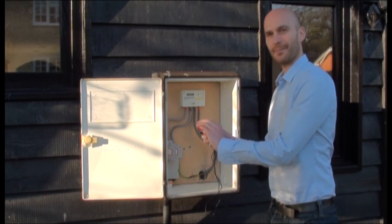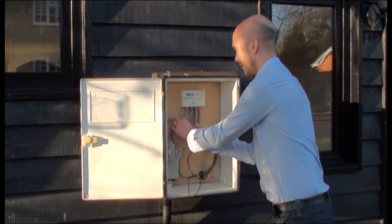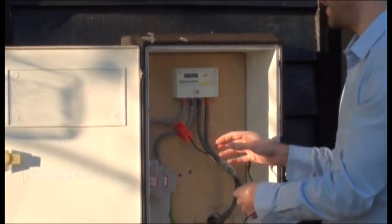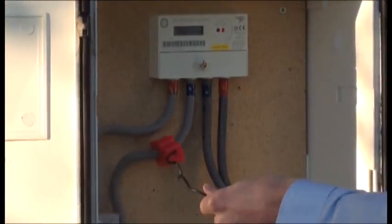So to install the sensor clip, simply open it up, fit it around the wire, snap it close again, and it can go around any of the four wires coming out of your usage meter.